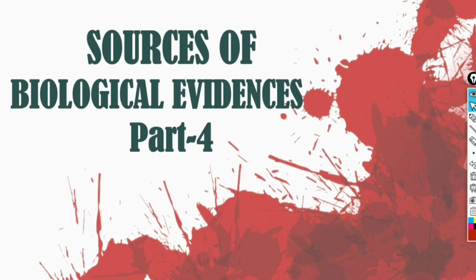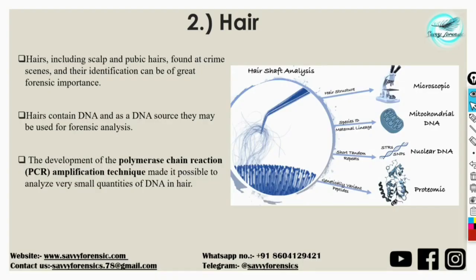Hair is usually a protein filament — basically a keratin protein filament — that grows from hair follicles found in the dermis. It is found all over our body, but from a forensic perspective only the scalp and pubic hairs are of utmost importance because they are frequently found at crime scenes.